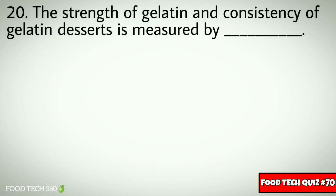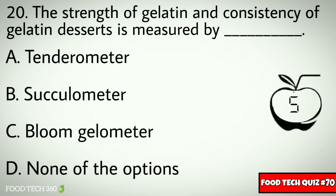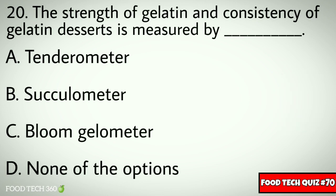Q20. The strength of gelatin and consistency of gelatin desserts is measured by dash. Options: A. Tenderometer, B. Swigilometer, C. Bloom Gelometer, D. None of the options. Correct answer: C. Bloom Gelometer.